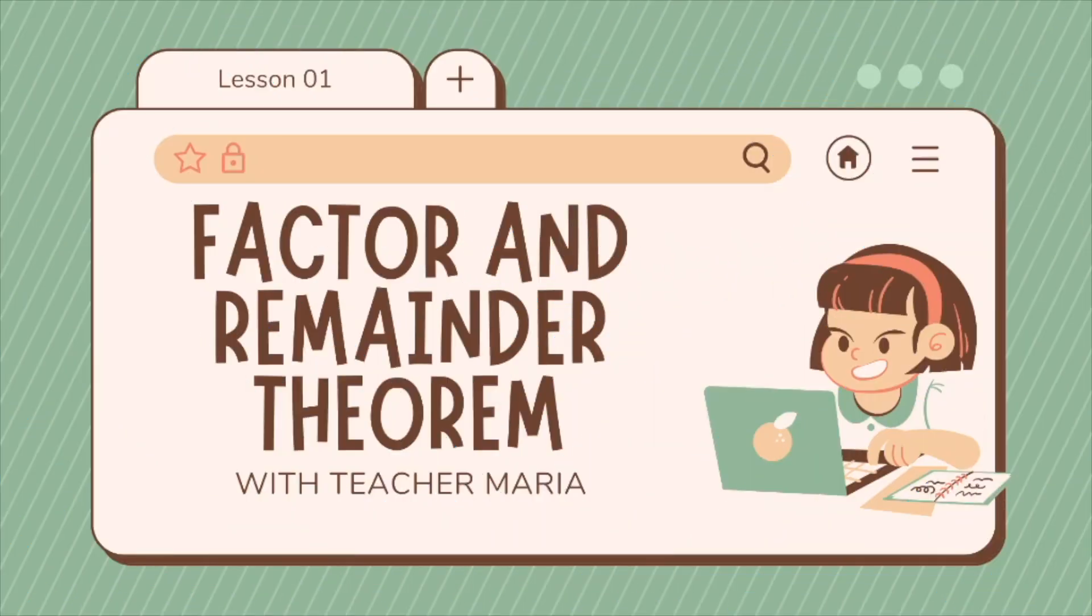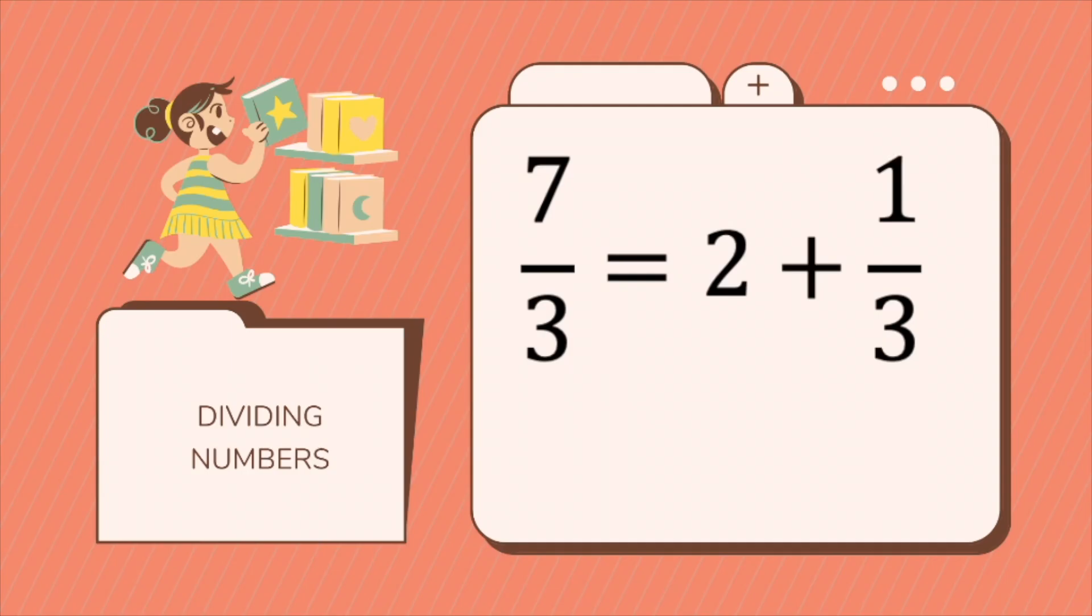Our topic for our Maths Easy episode will be about factor and remainder theorem. Now, when you are dividing or using to divide whole numbers to find a remainder, for example, we have 7 divided by 3. Our 7 here is what we call our dividend.